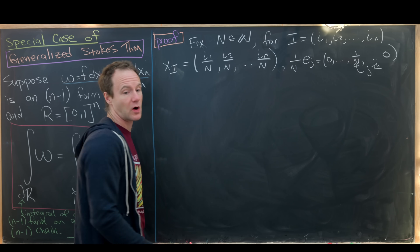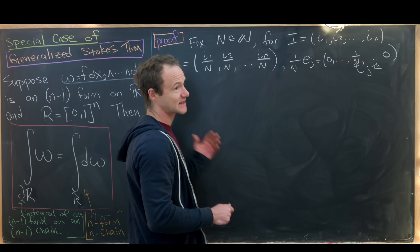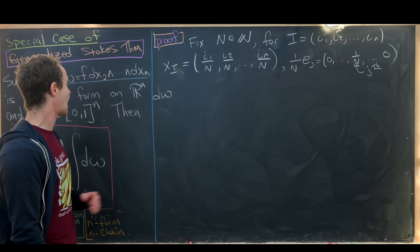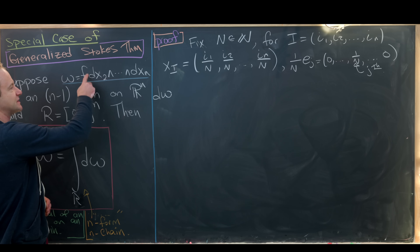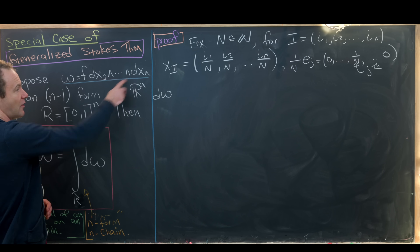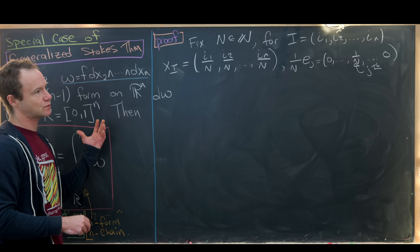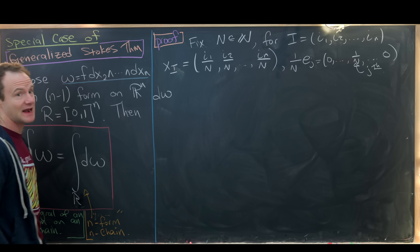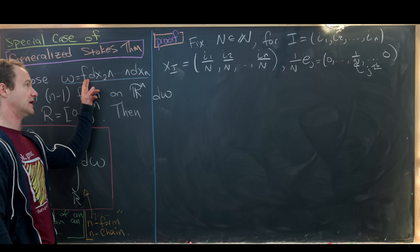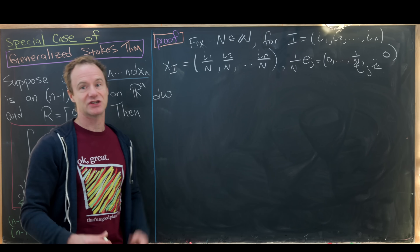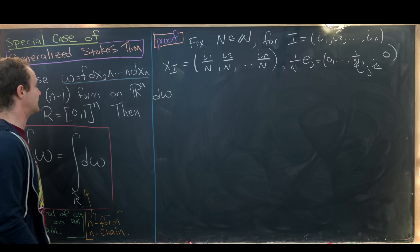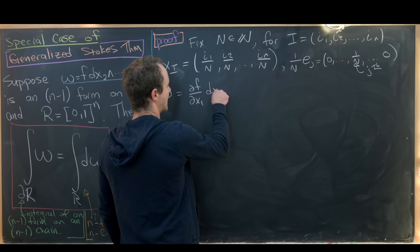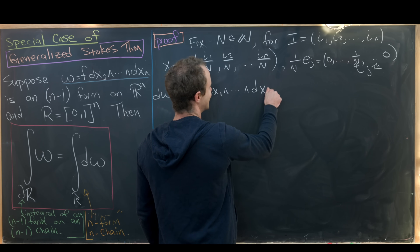Let's gather one more part. Let's note that d omega — the exterior derivative of this n minus 1 form — is going to be an n form. We calculate that by taking all the partials of f with respect to x1, x2, x3, all the way up to xn, and then wedging with dx1 wedge dx2 wedge all the way up to dxn. But everything collapses except for the x1 component, because whenever you wedge x_j with x_j you get zero, as we saw in previous videos. So this ends up being the partial of f with respect to x1, times dx1 wedge all the way up to dxn.